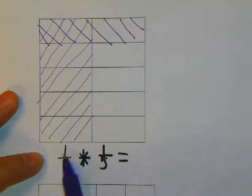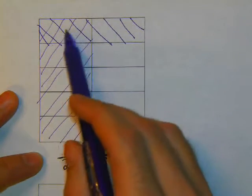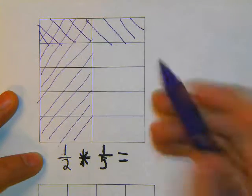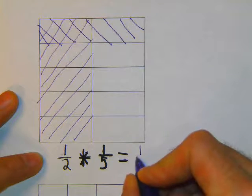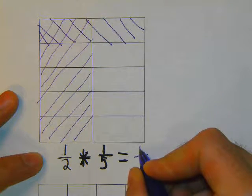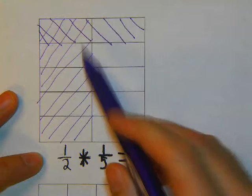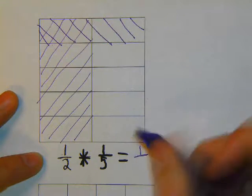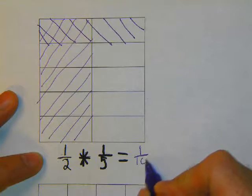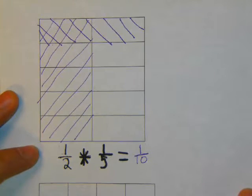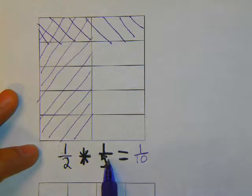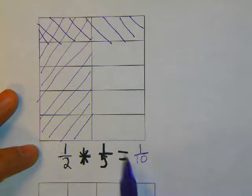So when I do 1 half times 1 fifth, I have one box shaded in with both types of diagonal lines. So my answer is 1 for the numerator. I have a total of 10 boxes. So that gives me a denominator of 10. So 1 half times 1 fifth is 1 tenth.